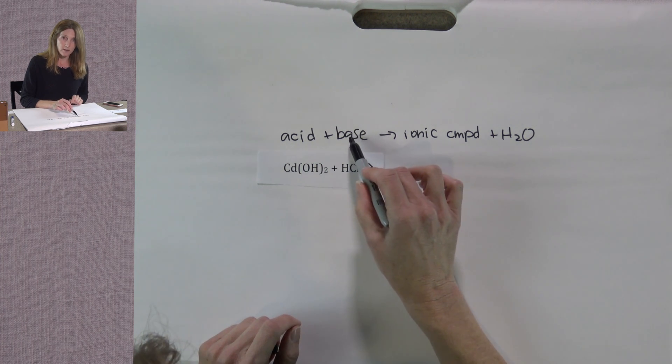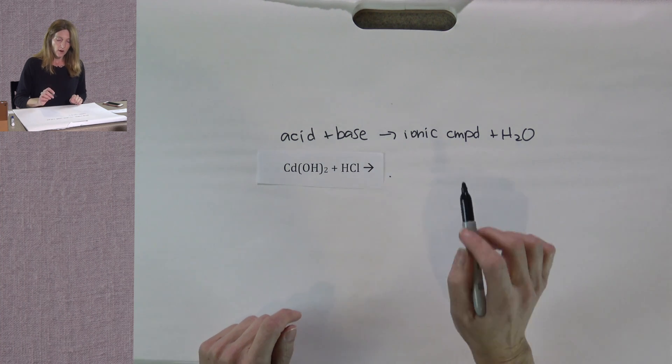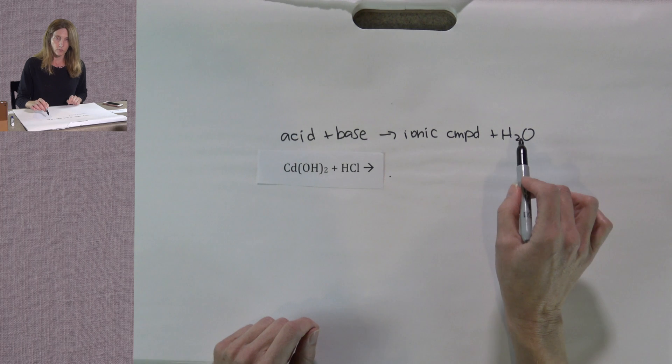Cadmium hydroxide, that is our base. HCl, hydrochloric acid, that is our acid. We know that we are going to get an ionic compound and water.